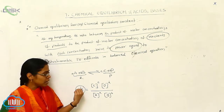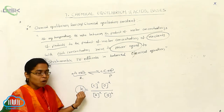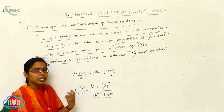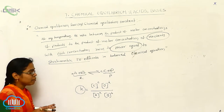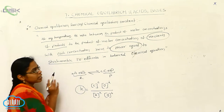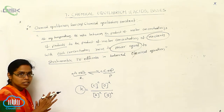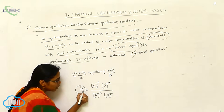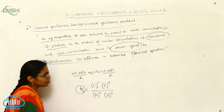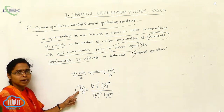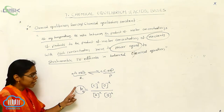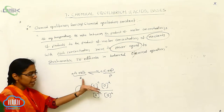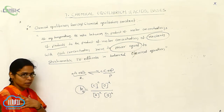This is called the chemical equilibrium constant, and it is always represented with the symbol K. Whenever we are taking the concentration, we use Kc. Kc indicates that we are using the equilibrium concentrations of reactants and products.